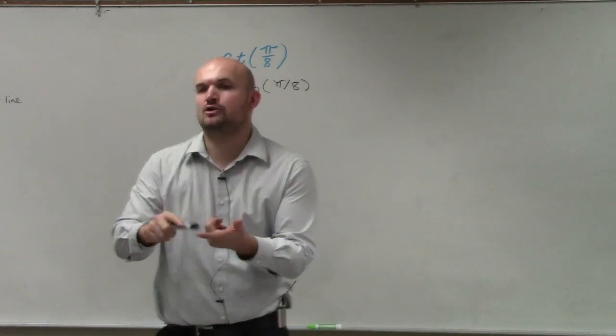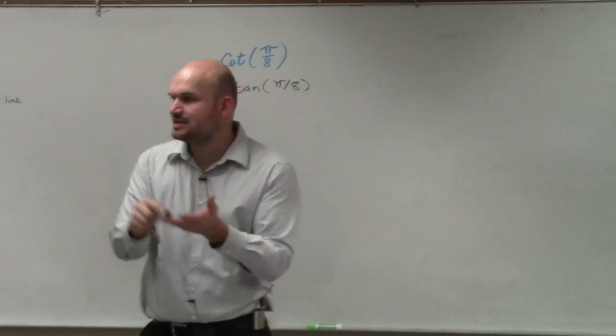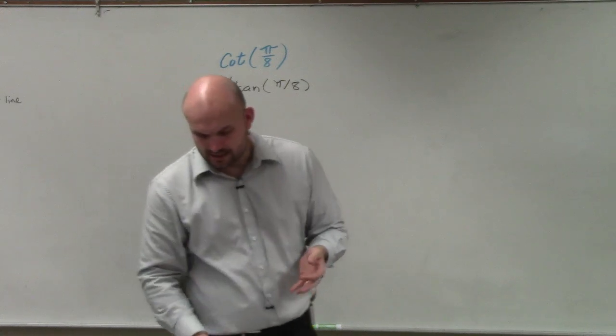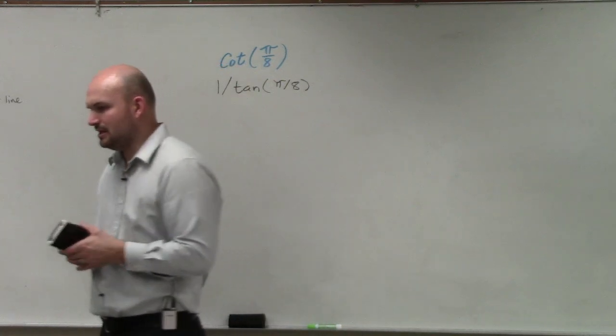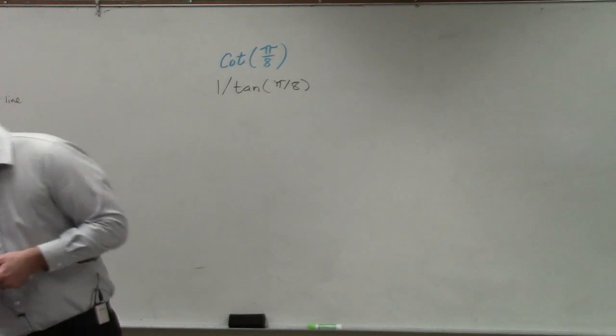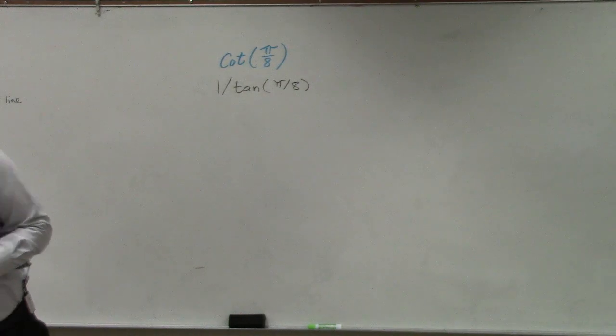So just remember that the cotangent, cosecant, and secant are not in your calculator, or at least in this calculator. I don't know about your trigonometric calculators. They're not in there either. So you'd have to do 1 divided by.